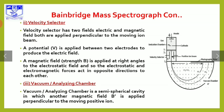The velocity selector has two fields — electric and magnetic — both applied perpendicular to the moving ion beam. A potential V is applied between two electrodes to produce the electric field.